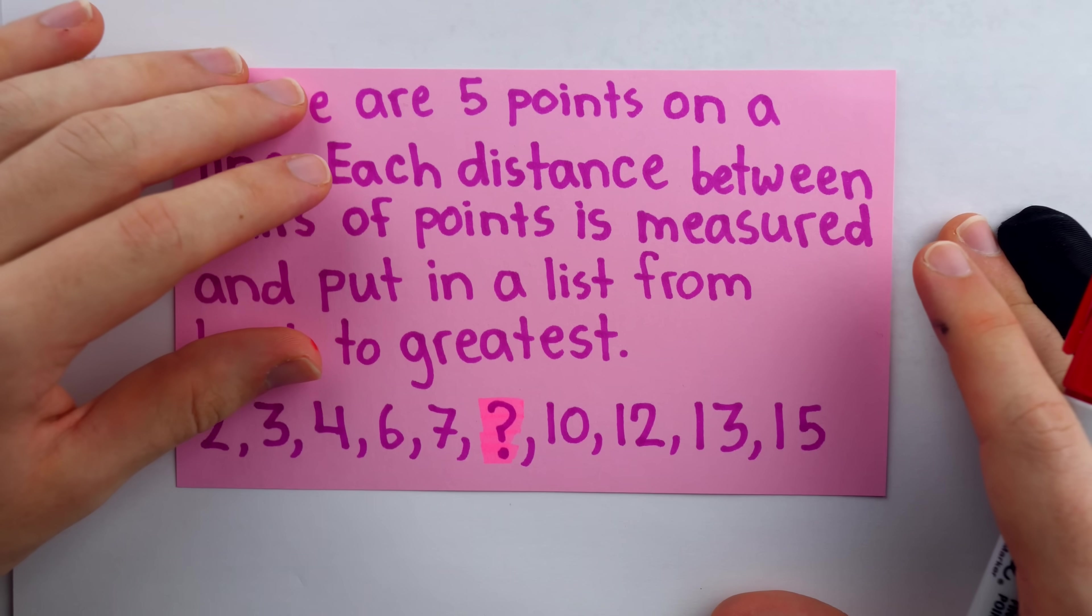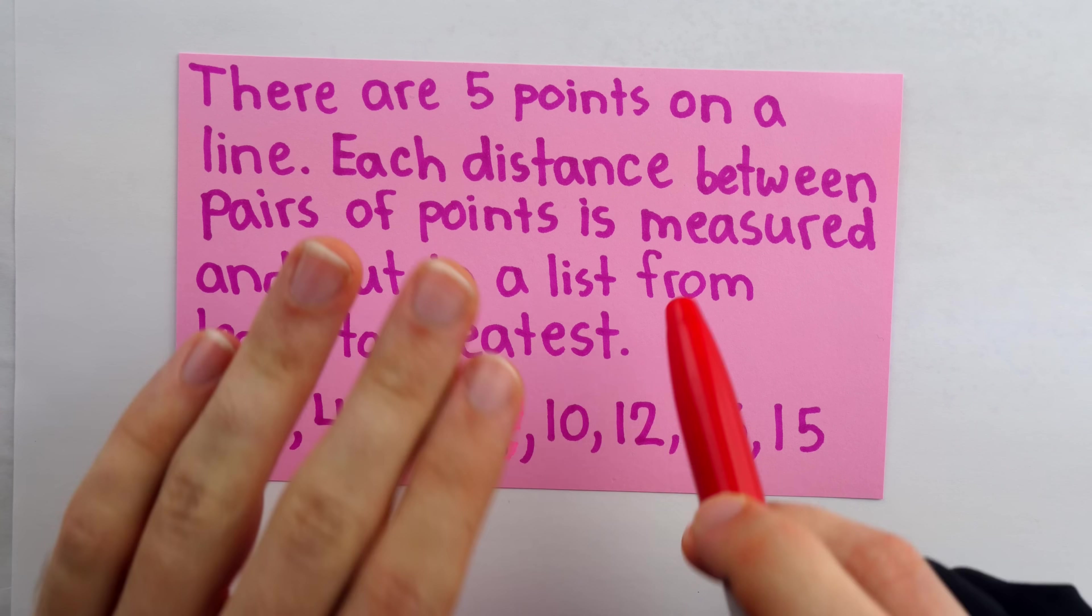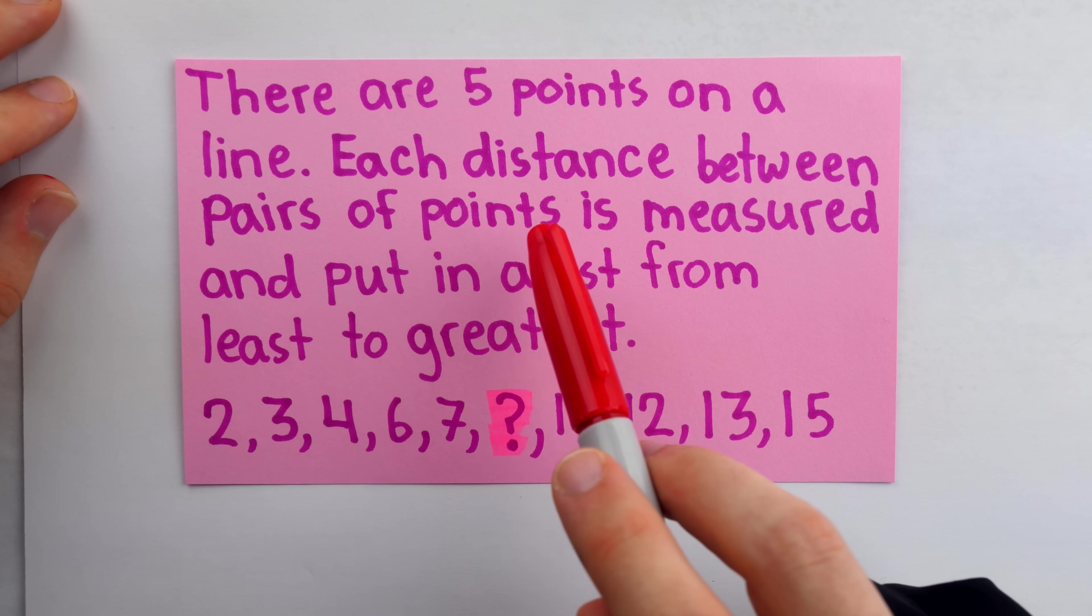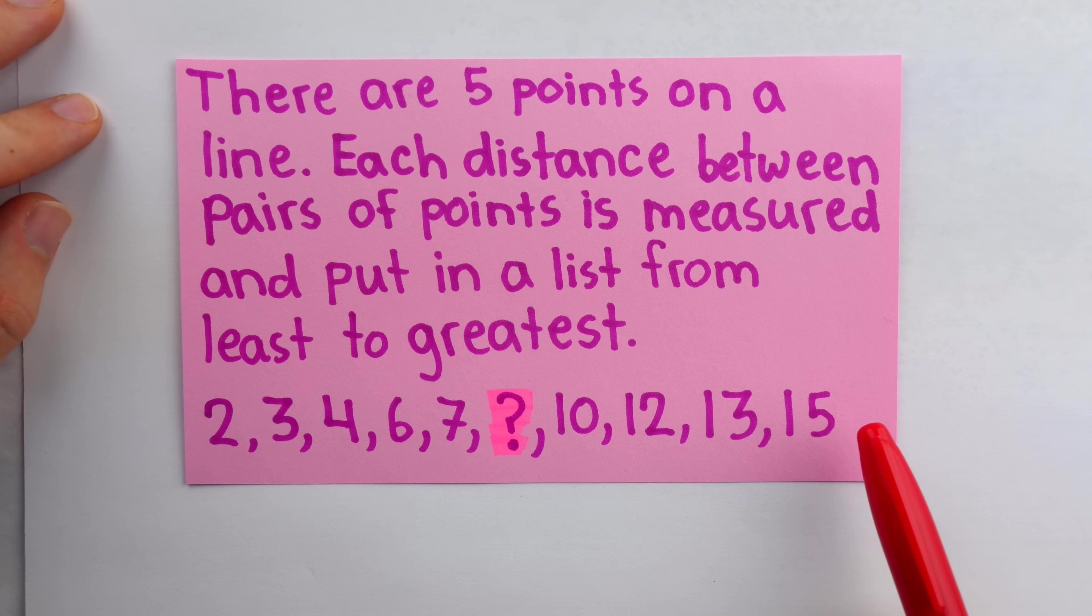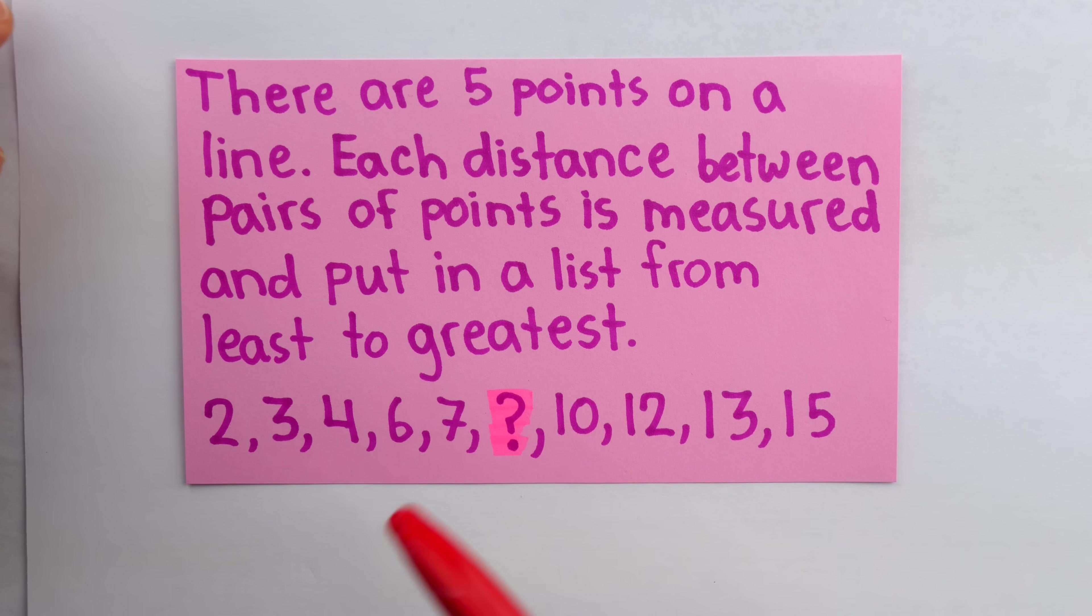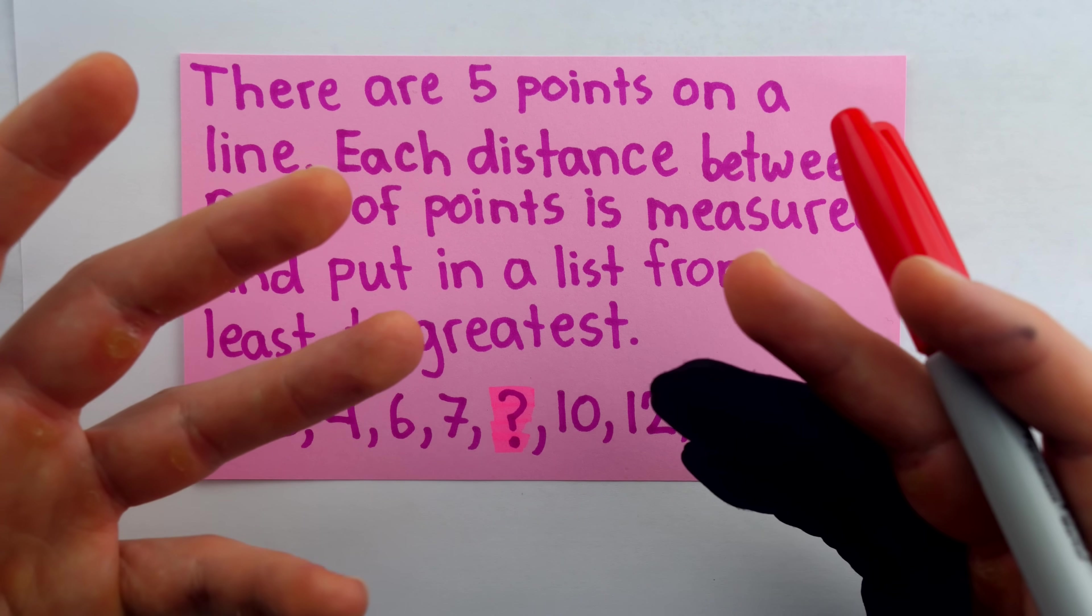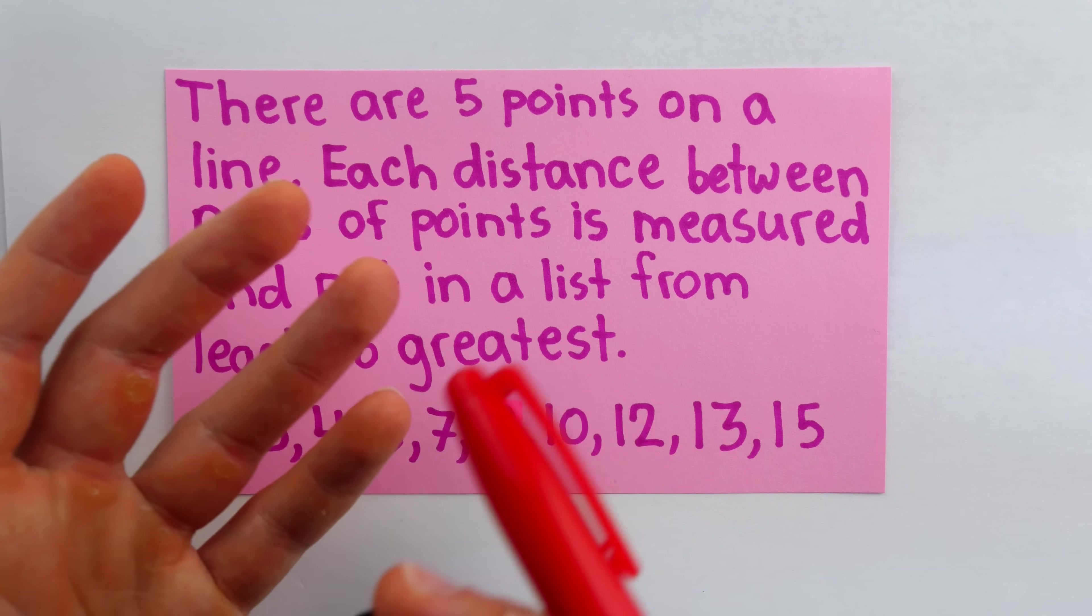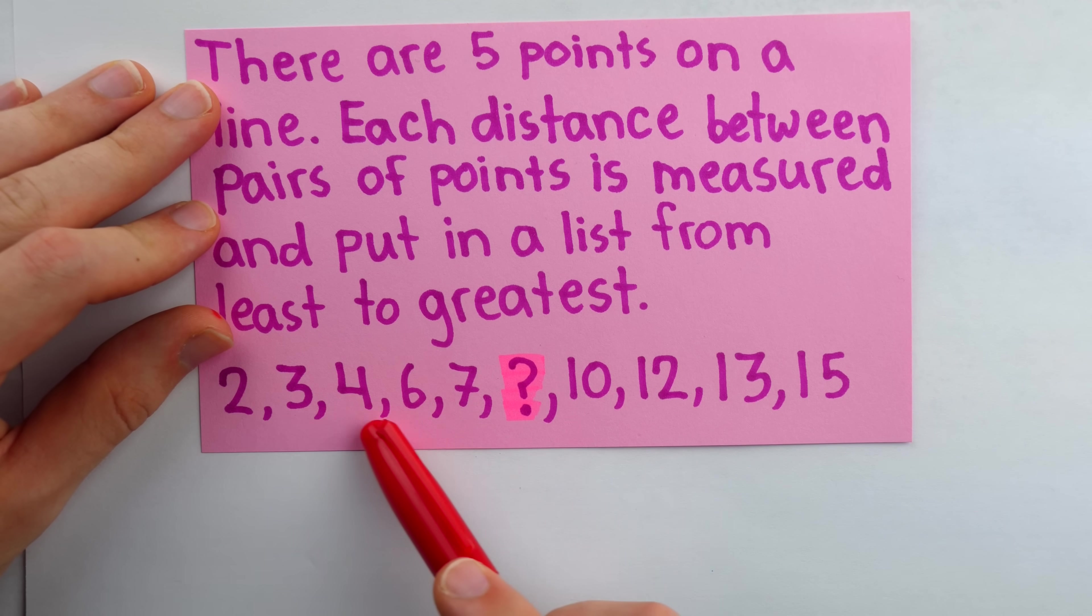This last puzzle has a bit more of a definitive math problem feel than cute little puzzle feel, but I think it's a great puzzle nonetheless. There are five points on a line. Each distance between pairs of points is measured and put in a list from least to greatest. Here is that list, and we see our objective is to find this one missing number in that list. You can pause now to try to solve it. If you keep watching, I'm going to go into some light hints and intro explanation as we get into that full solution.